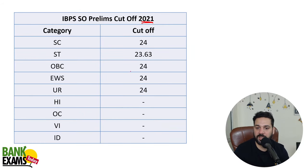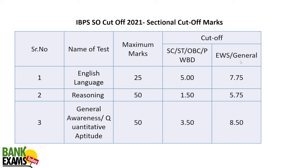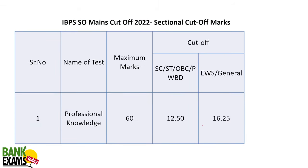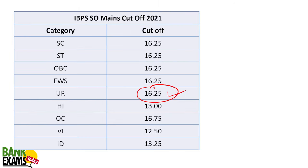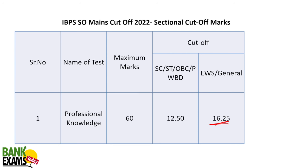IBPS SO pre-exam cut-off in 2021 was 24 for the unreserved categories — bahut kam tha out of 125, saare students kar hi lete hain. General category ka 2021 mein: 7.75 for English, 5.75 for reasoning, and 8.5 for general awareness. As you can see, 2022 mein cut-off badh gaya tha — yeh 2021 ka tha. Mains ka cut-off, unreserved category ka 16.25 — lekin koi relevance nahi iska. But final cut-off again — you can see it is 54.20. If you are able to score 16.25, aapka selection nahi ho payega. Selection tab hi hoga if you are able to score at least 30 out of 60 in mains.